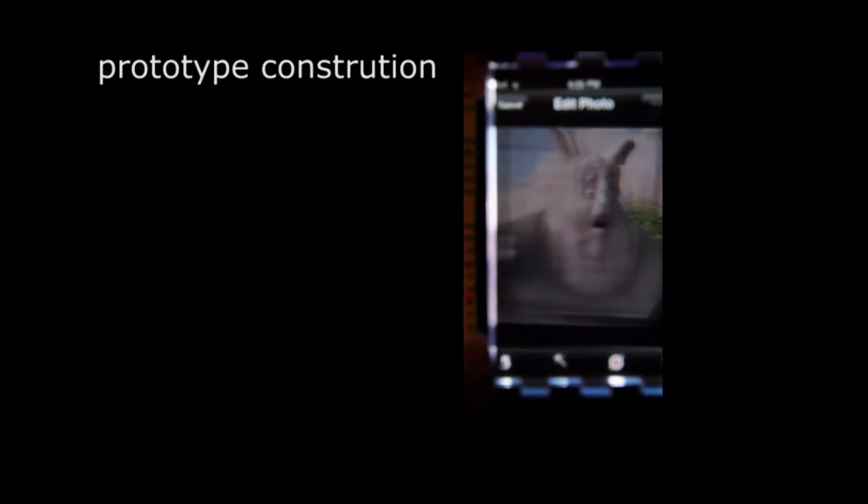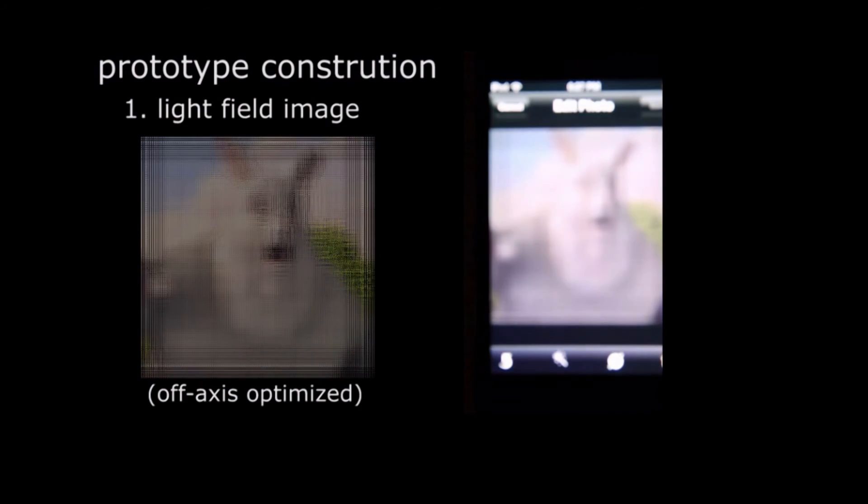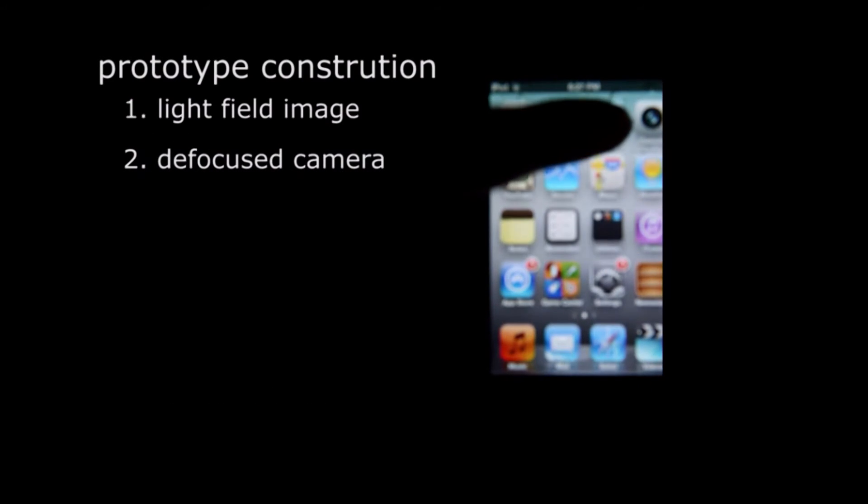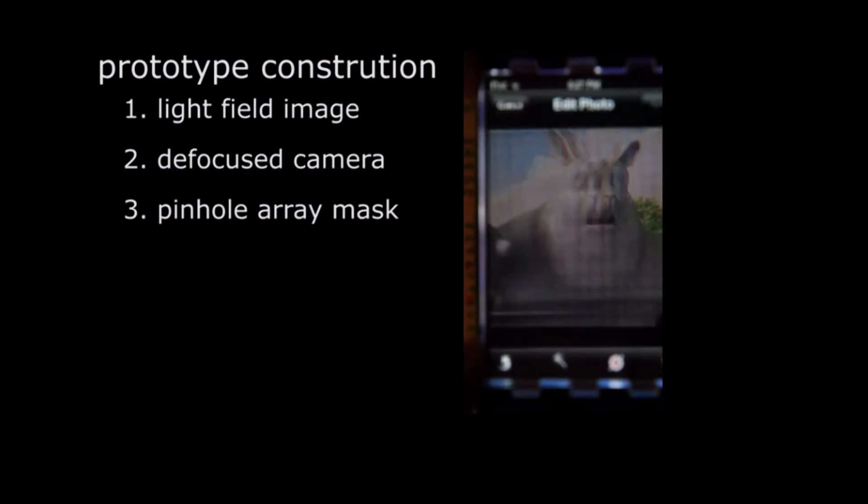The construction is also pretty simple. All we need to do is put a pre-filtered or pre-distorted light field content on a cell phone. Because the display is out of focus, everything just looks very blurred out. But as soon as we put the printed pinhole mask on the cell phone, make it a light field display, we can correct the vision pretty well.